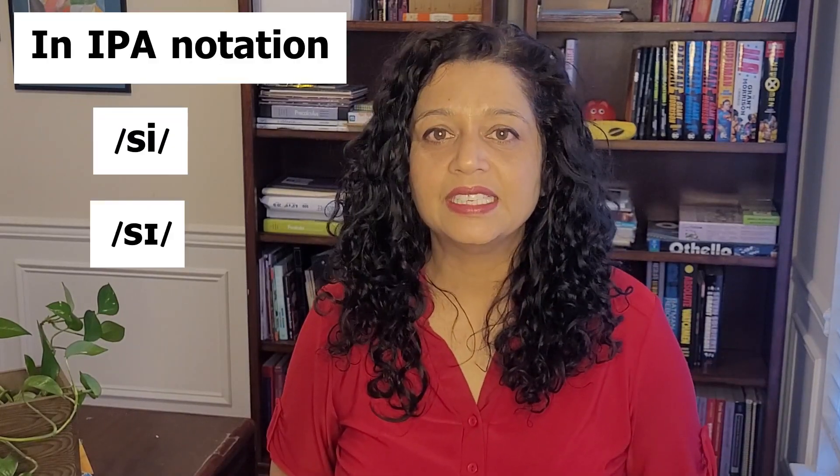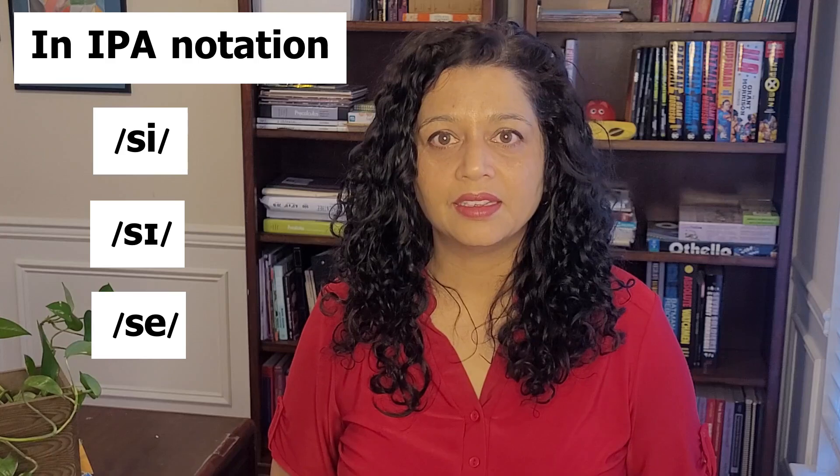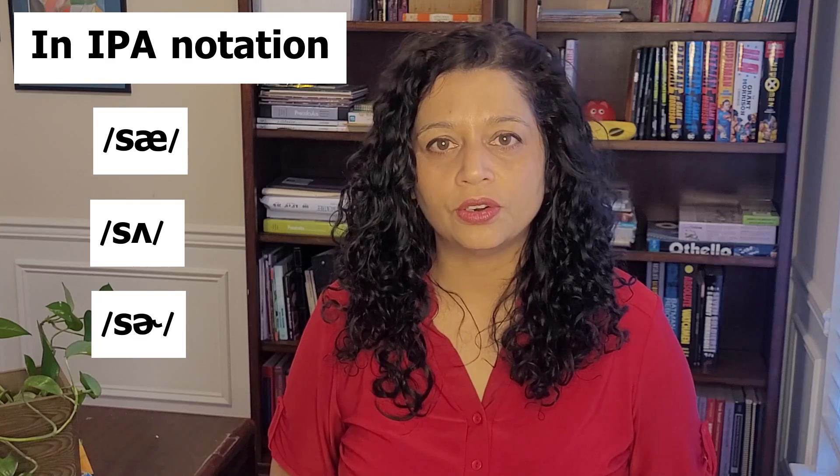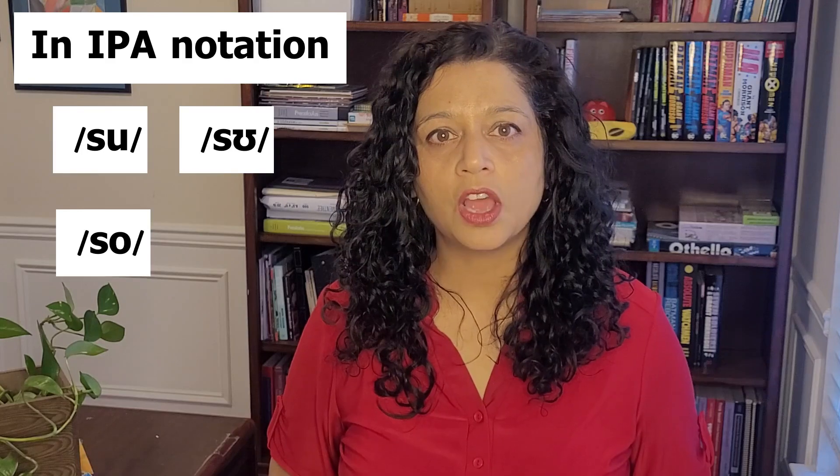Now we're going to practice at the syllable level — blending the S sound with all the different vowels. Here we go: see, sit, say, set, sir, sa, sue, so, saw.